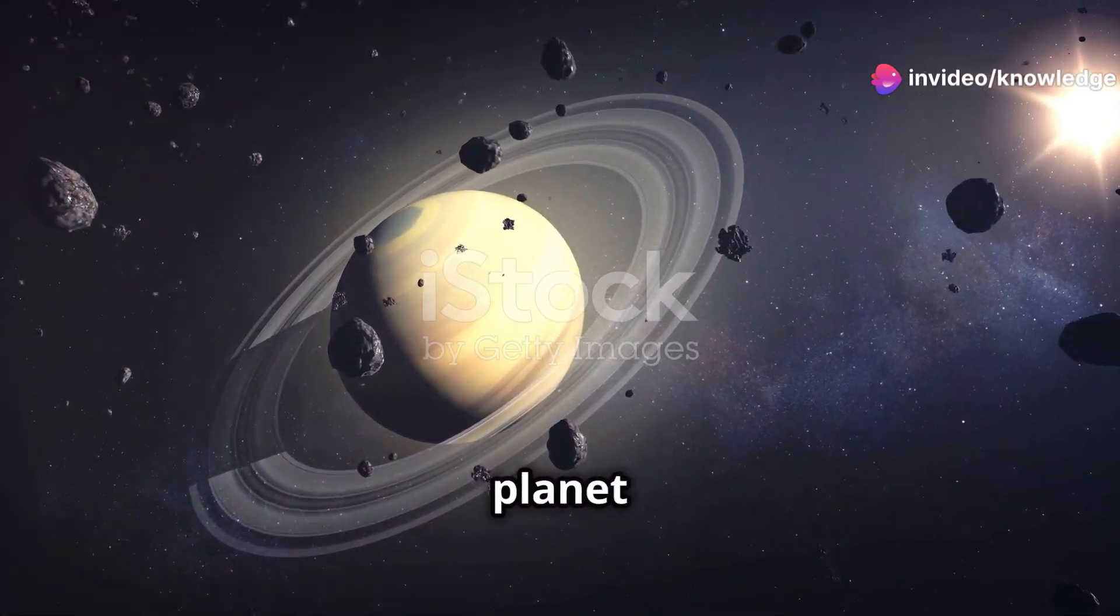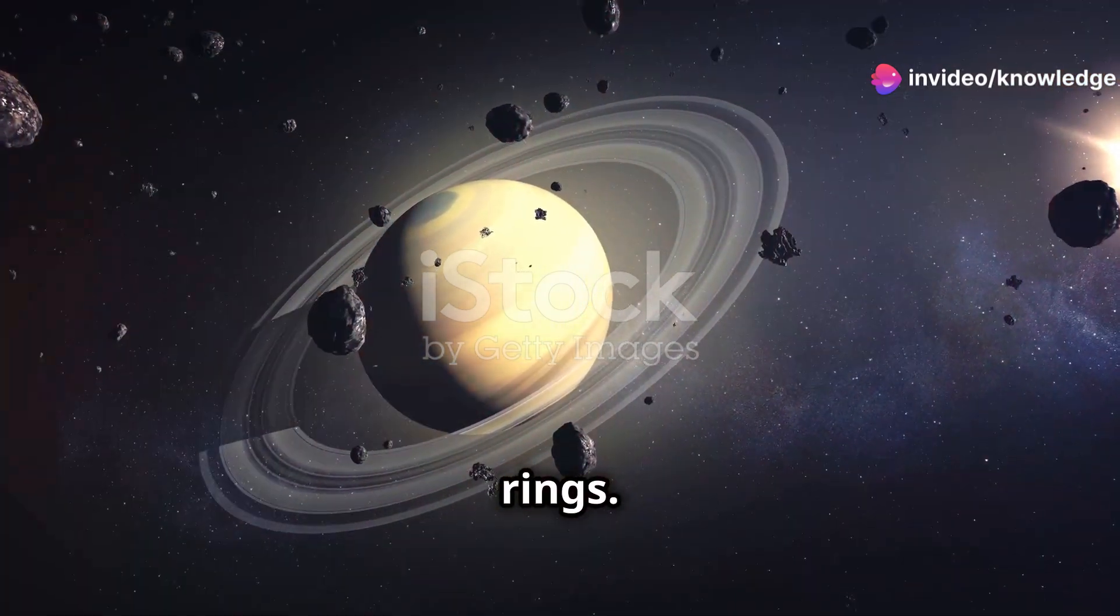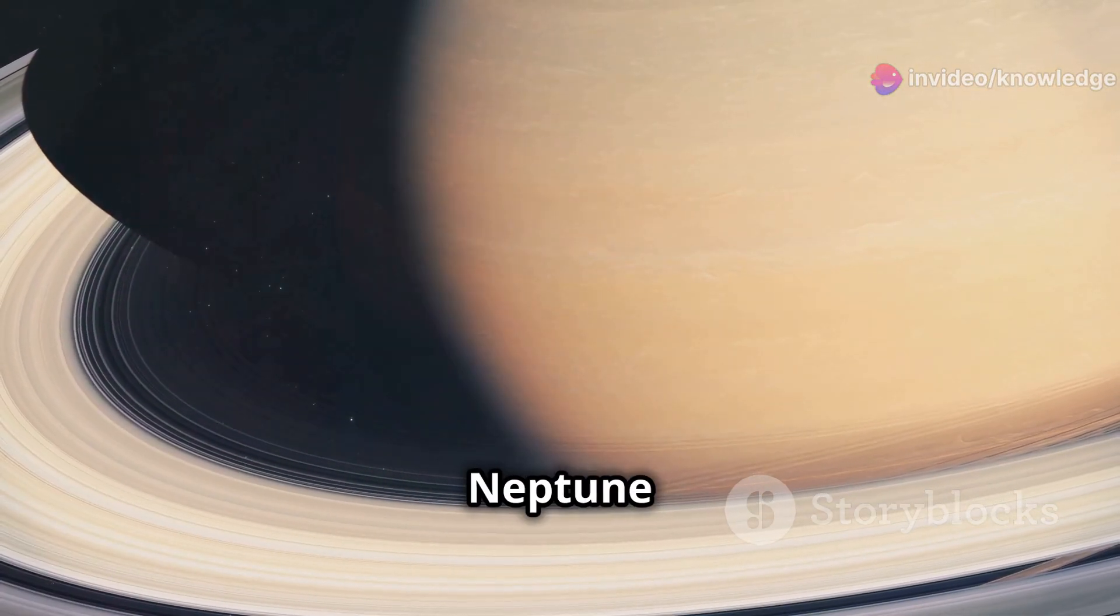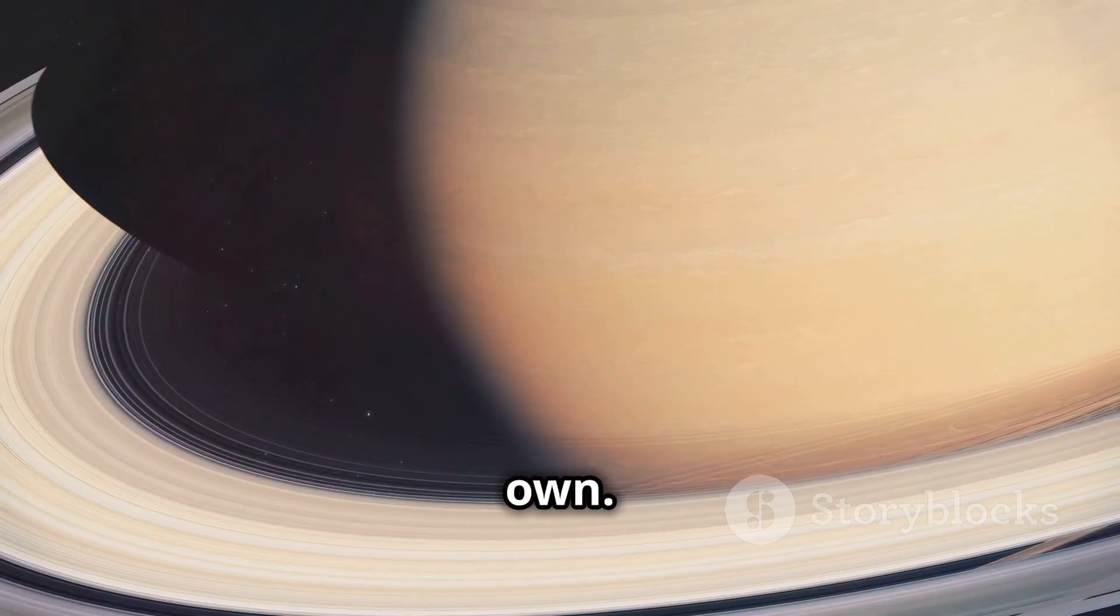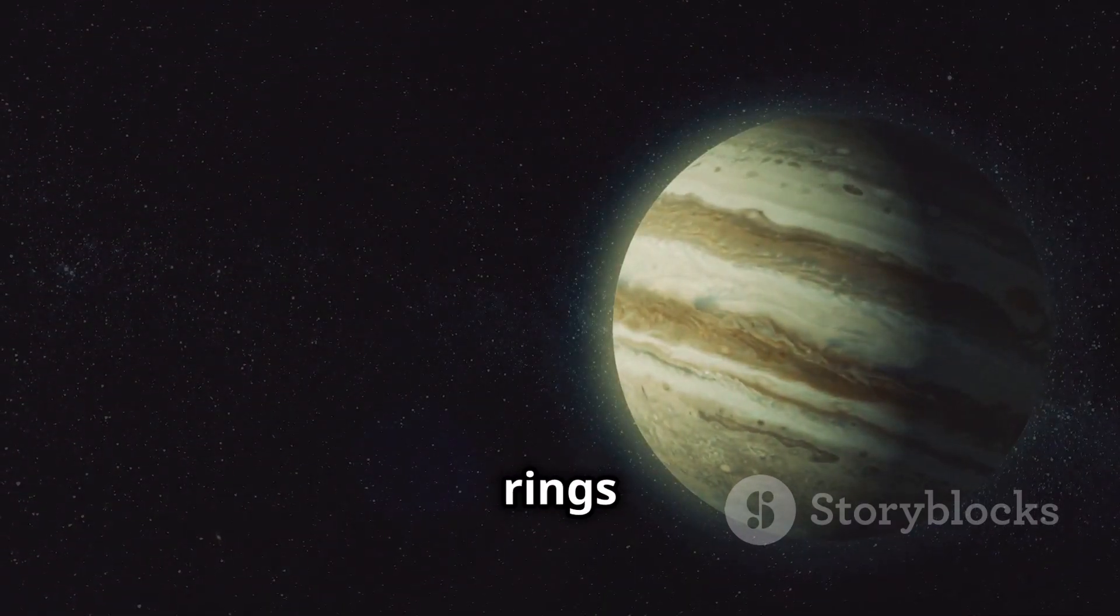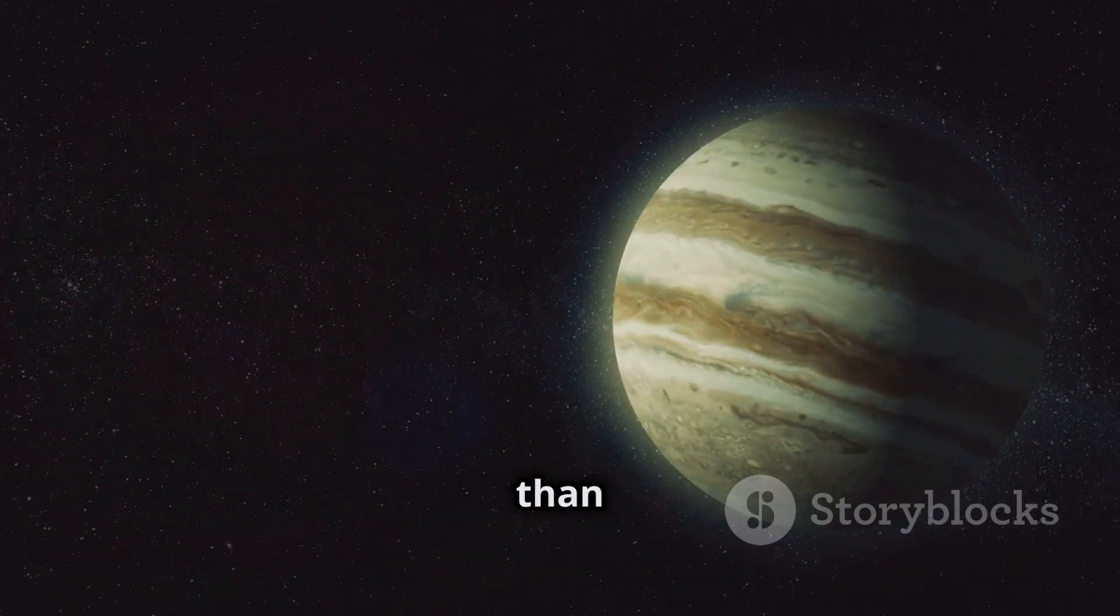Saturn isn't the only planet in our solar system with rings. Jupiter, Uranus and Neptune all have ring systems of their own. However, these rings are much fainter and less prominent than Saturn's.